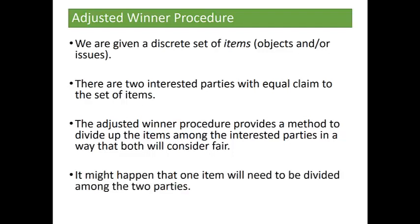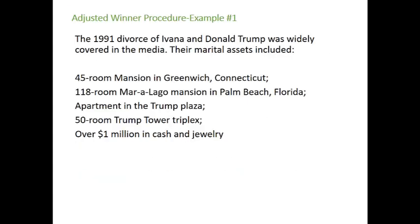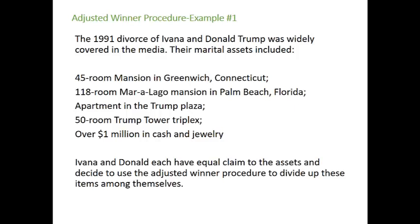It might happen that one item will need to be divided among the two parties — we'll talk about what that means in practicality as we go through the example. The example we're going to focus on is the 1991 divorce of Ivana and Donald Trump. Their marital assets included a 45-room mansion in Greenwich, Connecticut; a 118-room Mar-a-Lago mansion in Palm Beach, Florida; an apartment in the Trump Plaza; a 50-room Trump Tower triplex; and over a million dollars in cash and jewelry. Ivana and Donald each have equal claims to the assets and they decide to use the adjusted winner procedure.